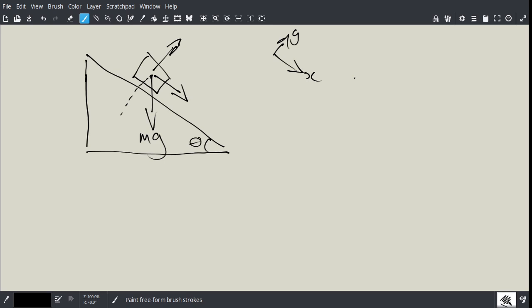Okay, so in this problem we have a mass on a slope, and the angle which the slope makes with the horizontal is theta.